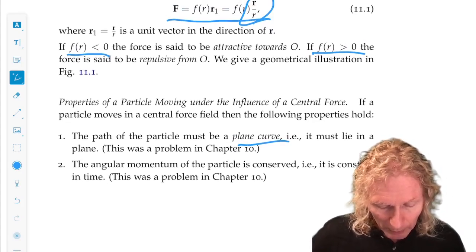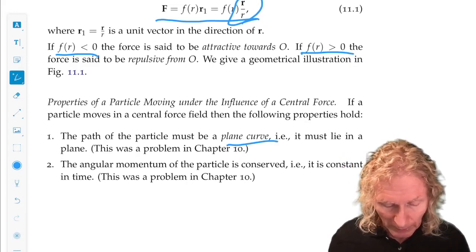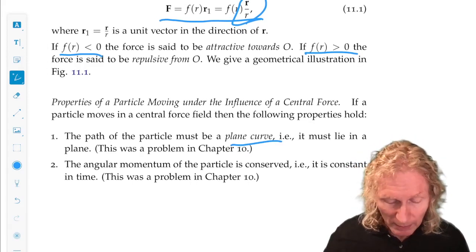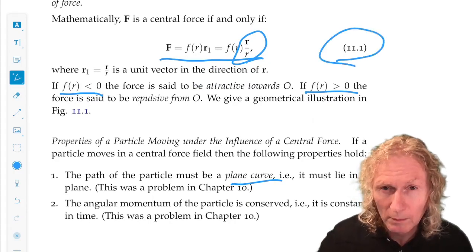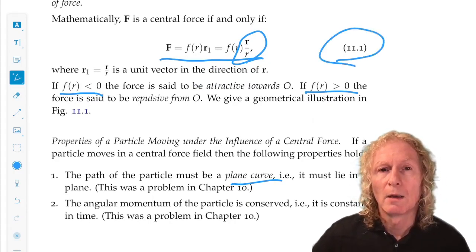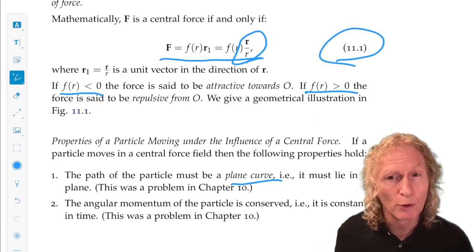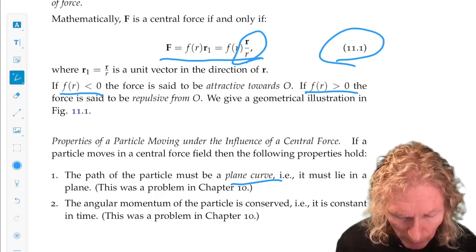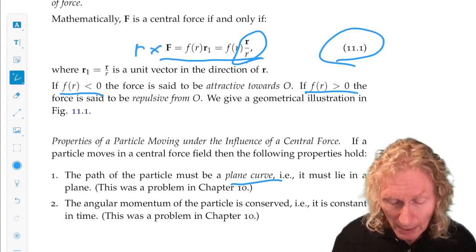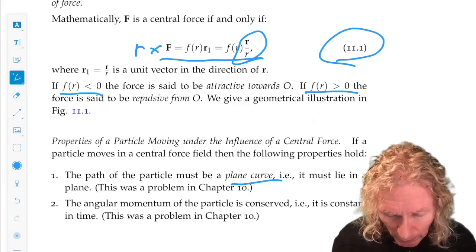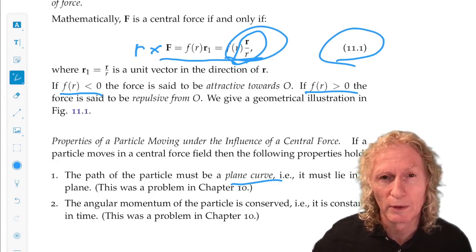And then the angular momentum of the particle is conserved, meaning it's constant in time. These two properties are pretty easy to see from the form of the force. Because the torque on the particle about the origin is R cross F, and because F has this form, R cross R is zero. The cross product of any vector with itself is zero.